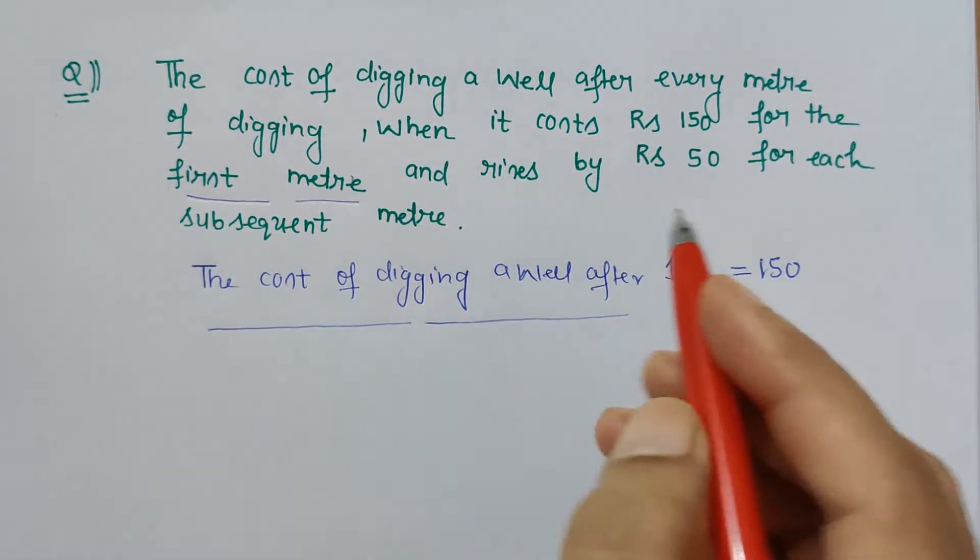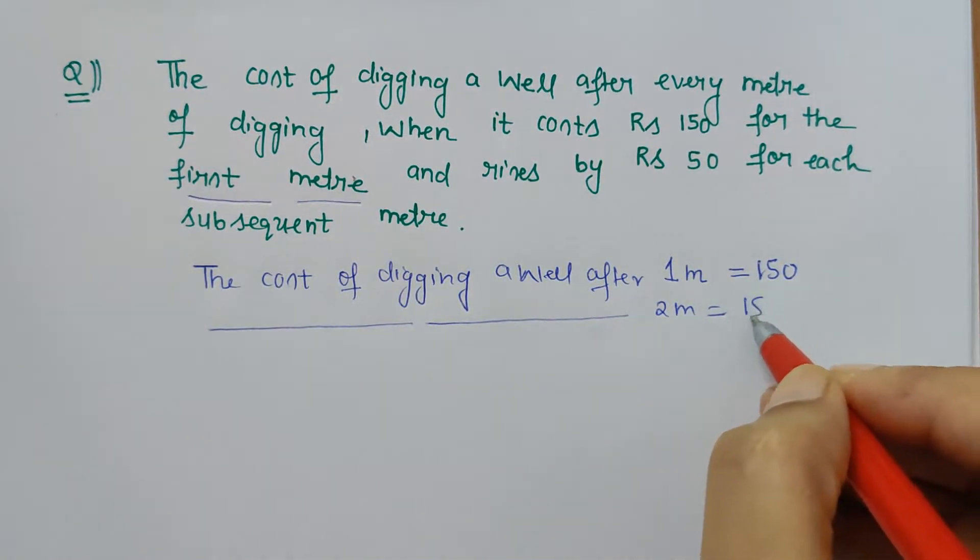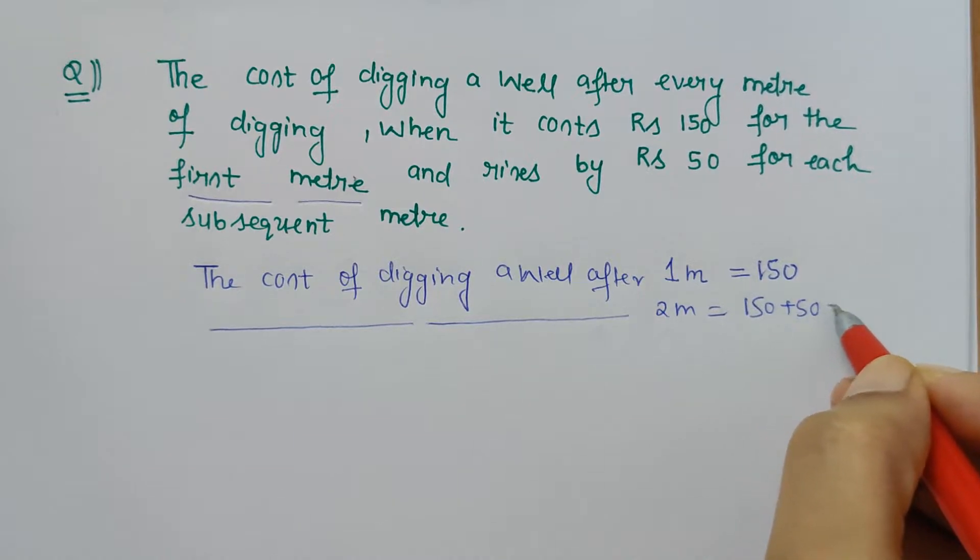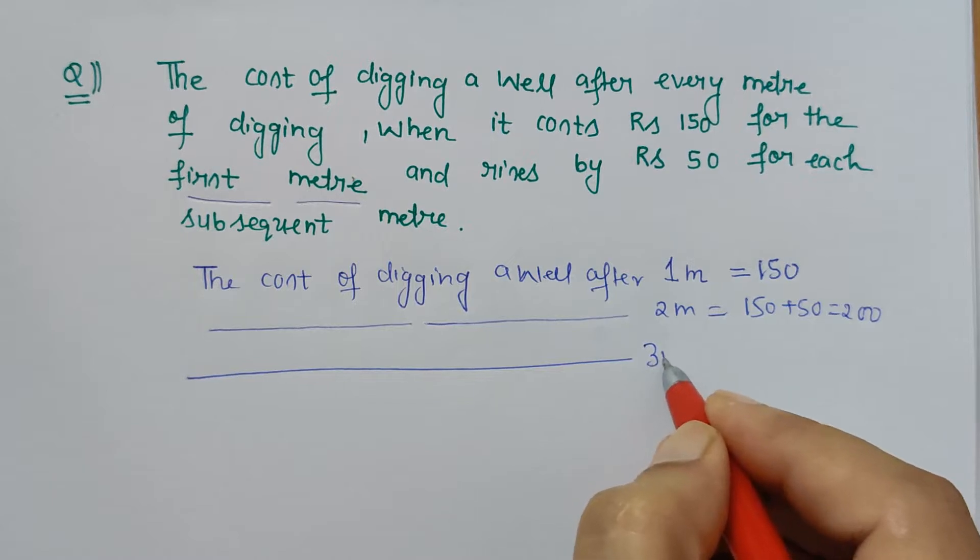Let's say the cost of digging a well after two meters - it will rise by 50 rupees so now it becomes 200. And the cost of digging a well after three meters would be 200 plus 50 which is 250.